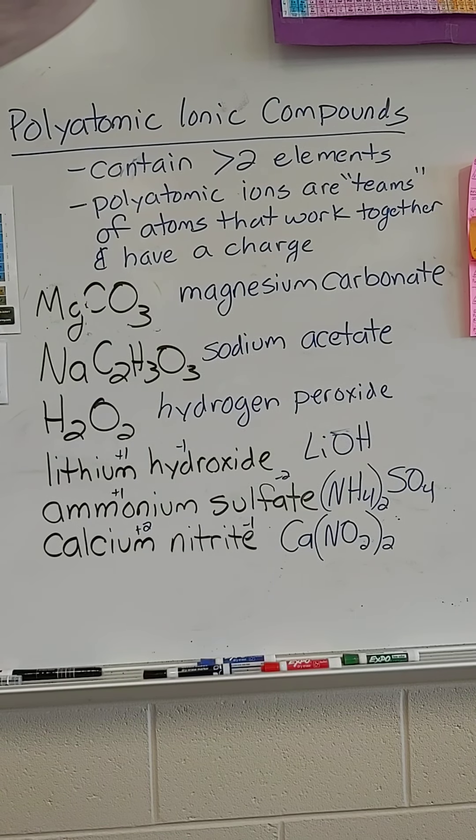Quick review: polyatomic ions almost always contain more than two elements — peroxide is the only exception. They are teams of atoms that work together with a single charge for the whole team. Look everything up on your polyatomic chart — there's no need to memorize it for this class. You name the first element, name the second thing, and look one or both up on your chart if needed — like magnesium carbonate. If you see something very long, don't panic, it's probably just on your chart. And always remember to balance your charges. Thank you so much, I hope this helps.